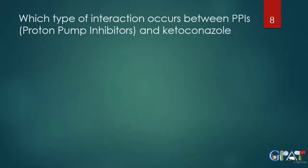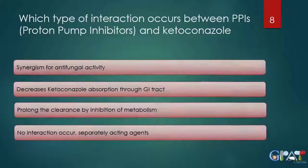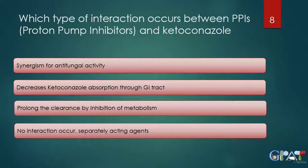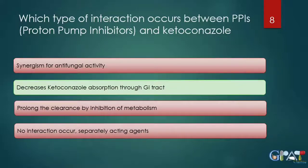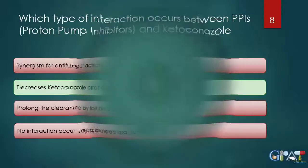The next question is: which type of interaction occurs between proton pump inhibitors and ketoconazole? The options are synergism for antifungal activity, decreases ketoconazole absorption through the GI tract, prolongs clearance by inhibition of metabolism, or no interaction occurs. The answer is: it decreases ketoconazole absorption through the GI tract.